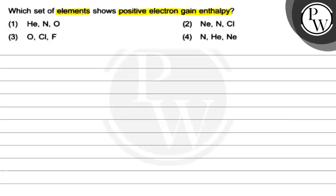Option 1 is helium, nitrogen, oxygen. Option 2 is neon, nitrogen, fluorine. Option 3 is oxygen, fluorine and fluorine. Option 4 is nitrogen, helium and neon.